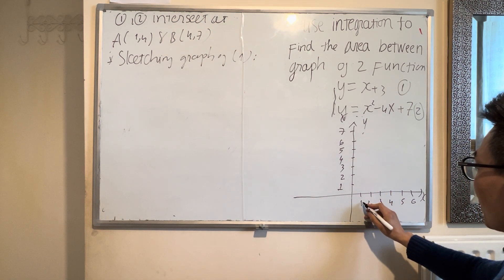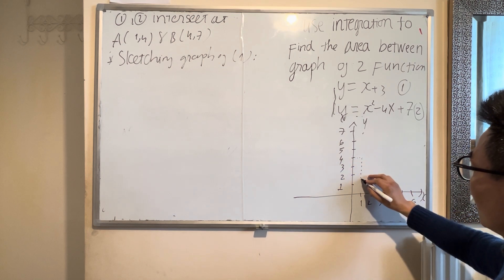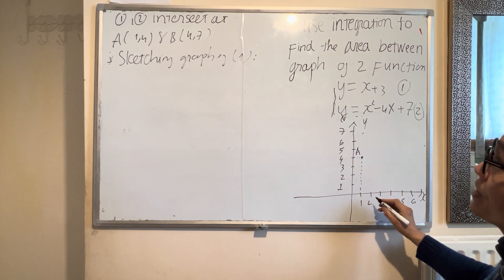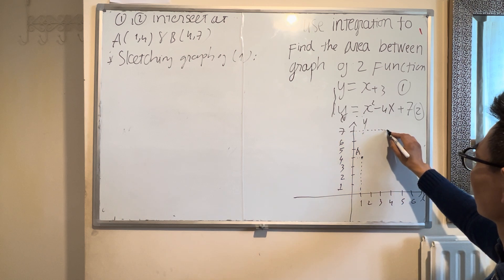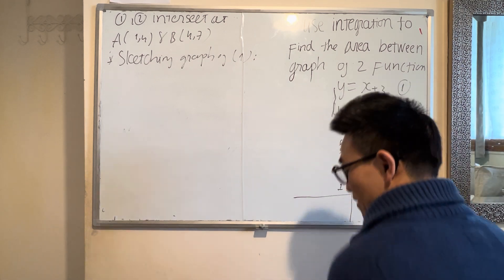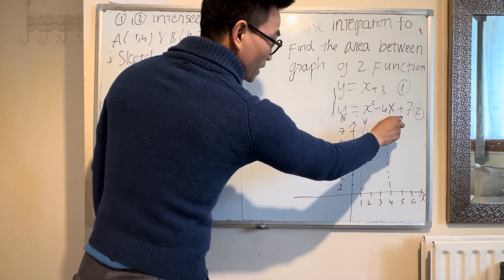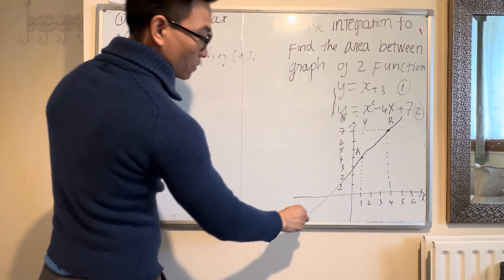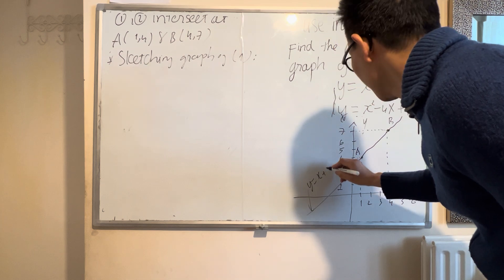Point A has coordinates (1, 4) and point B has coordinates (4, 7). Now draw the graph of function one — the straight line through A and B. Function two, y equals x squared minus 4x plus 7, also passes through A and B.